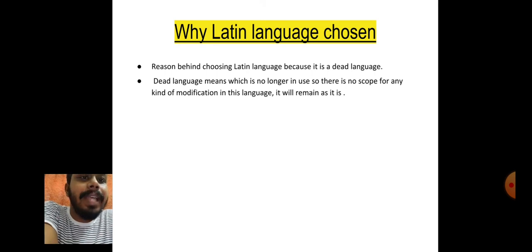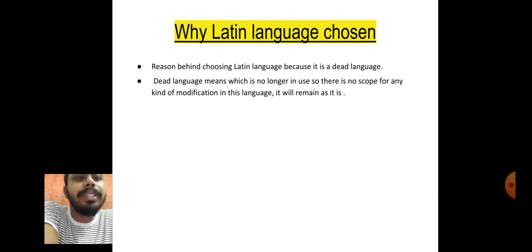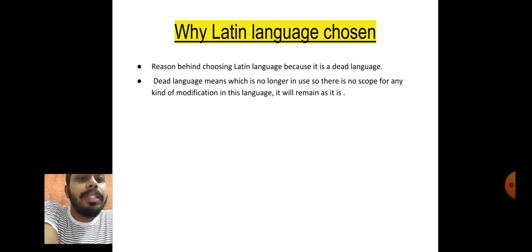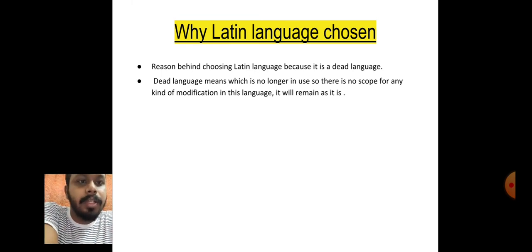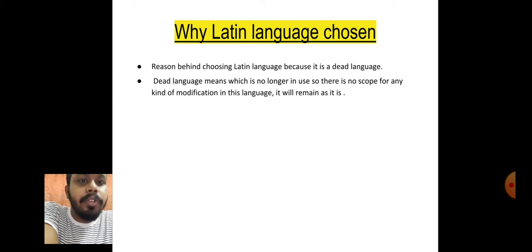The next topic is why scientific names are written in Latin. Latin is chosen because it is a dead language — a language no longer in use. Since it is a dead language, there is no scope for any modification, so the scientific name will remain as it is. That's why Latin is used — to reduce or remove any modification in scientific names.